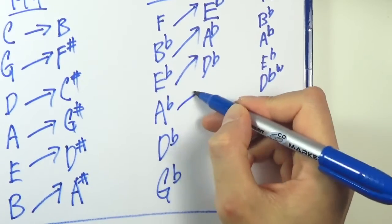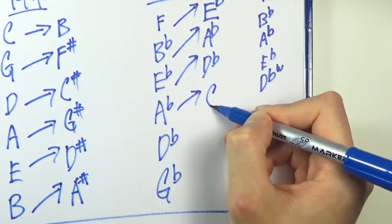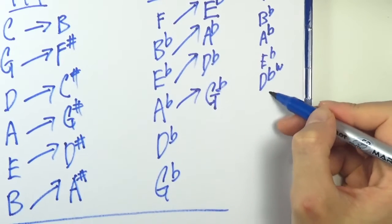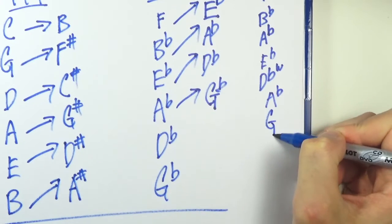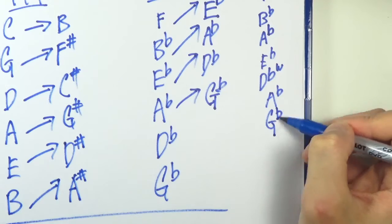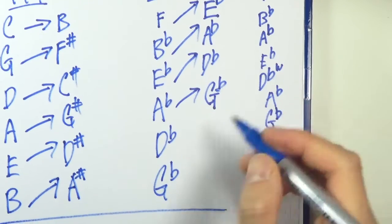What about A flat? I'm just going to do it here. G. G flat, right? So you have A flat G. G flat, A flat. Is that a whole step apart? Awesome. That's it.